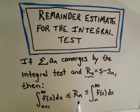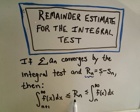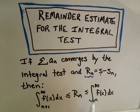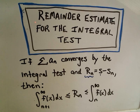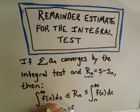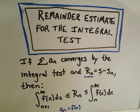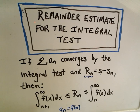The remainder, if you sum up the first n terms, will be less than or equal to the integral from n to infinity of f of x, where a sub n equals f of n. It will be bounded above by the integral from n+1 to infinity.